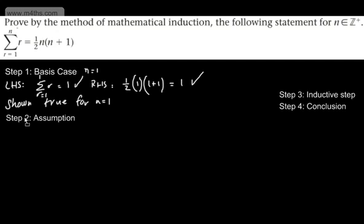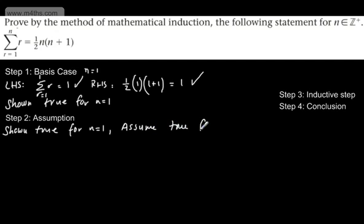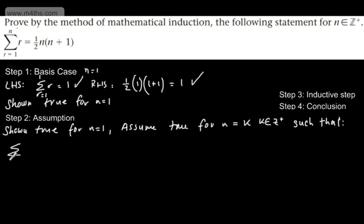We're now going to do step two, which is the assumption. We've shown it's true for n is equal to 1. Now we assume true for n is equal to k, where k is a positive integer. At this stage, I like to write out 'such that' and rewrite the statement with n equal to k: such that the sum from r equals 1 to k of r is equal to one half k times (k plus 1). Depending on which exam board or textbook you're using, it doesn't always require you to include this, but I like to do it just to keep on top of things.